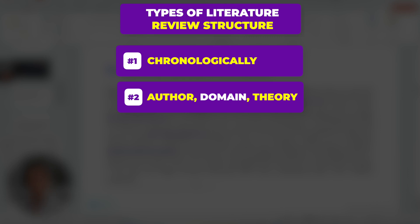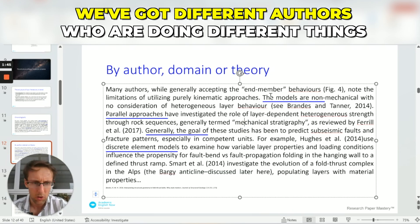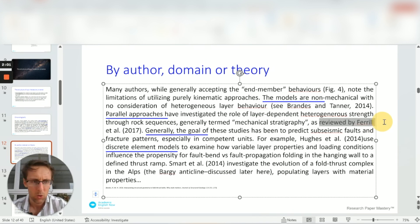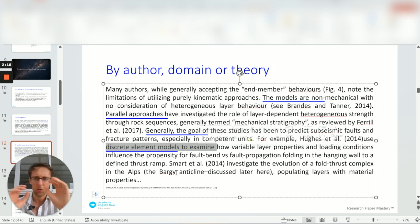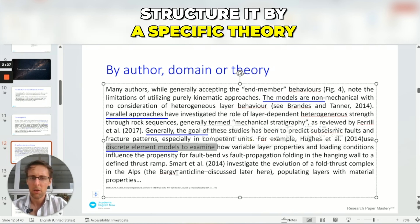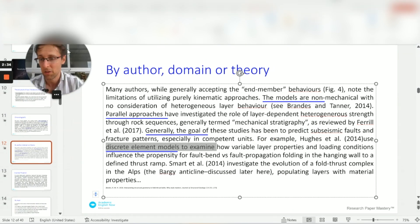You can also structure things by author, domain, or theory. Here we have different authors doing different things — for example, non-mechanical models done by Brands and Tanner, then parallel approaches investigating the role of layer dependence reviewed by another researcher, and then another type of study using discrete element models. You can structure an entire section of the literature review this way, where each paragraph presents one theory or one author's approach in detail.